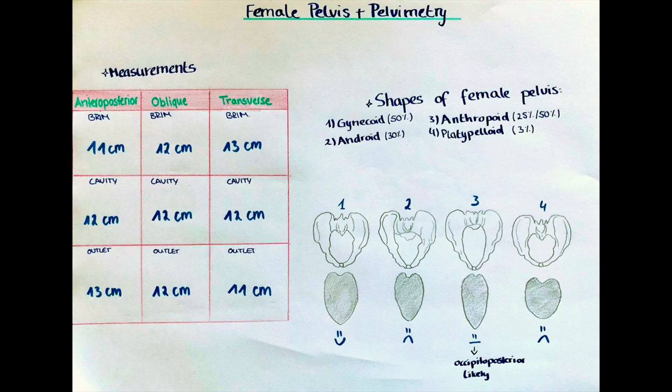For the pelvic cavity, the numbers of the diameters are easy to remember. It is round in shape so all diameters are 12 cm. The anteroposterior diameter is measured from the inner border of the symphysis pubis to the curvature of the sacrum. For the oblique measures, we use the sacroiliac joint as one point and the pubic rami as the other. The transverse measure is taken from the right to the left inner area of the ischium.